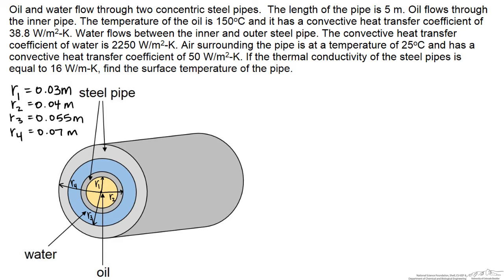Here we are going to look at a radial system and calculate a surface temperature. What we are going to do is find the heat rate, which is equal to an overall heat transfer coefficient times the area times the change in temperature that that overall heat transfer coefficient covers.